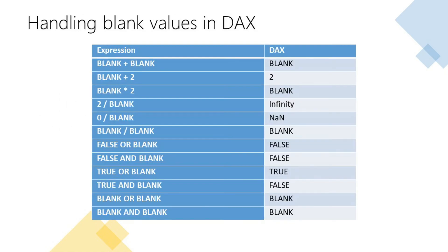This final table shows how the different DAX operators handle blank values. The blank data type represents nulls, blank values, empty cells, and missing values. The BLANK function is used to generate blanks while the ISBLANK function is used to verify the existence of a blank value.